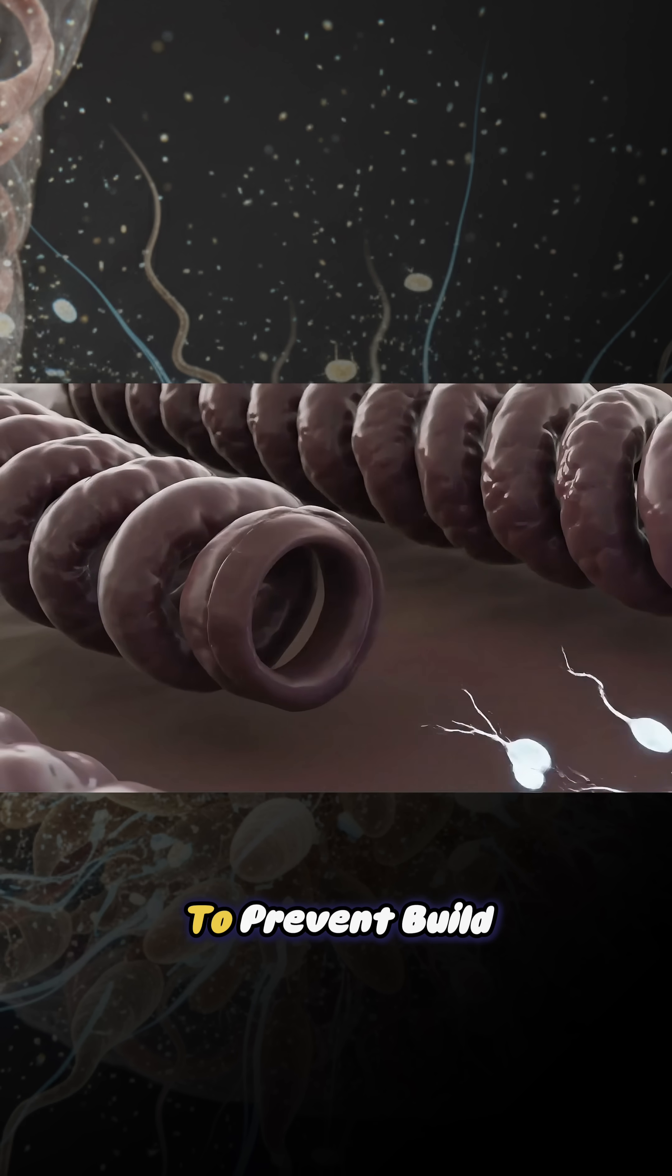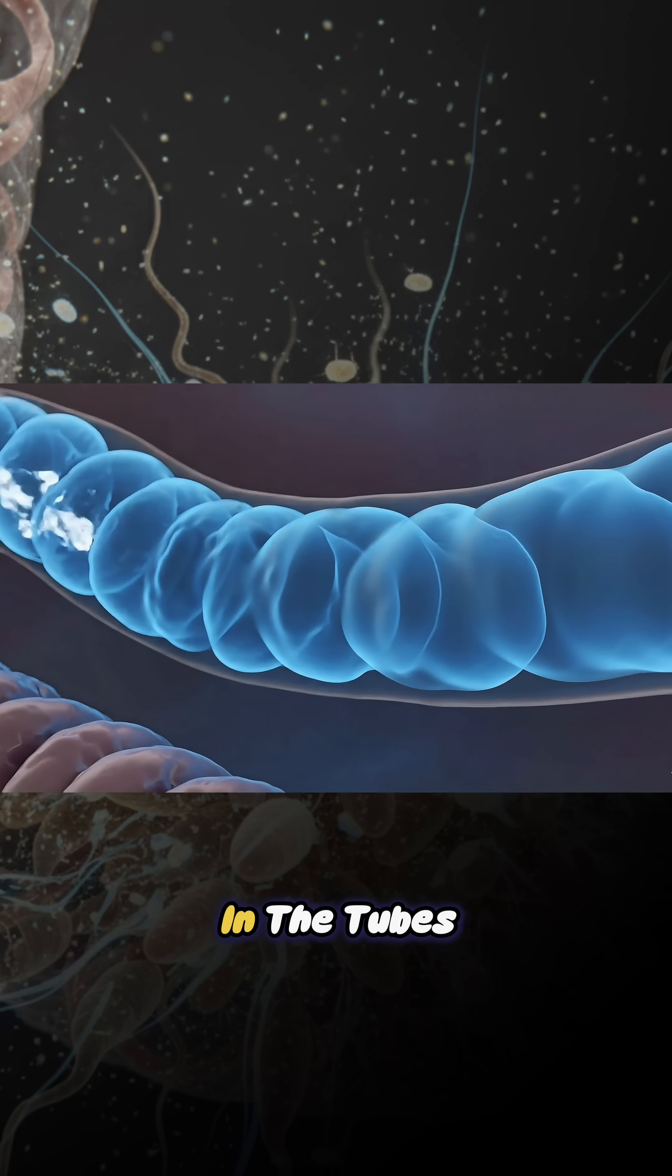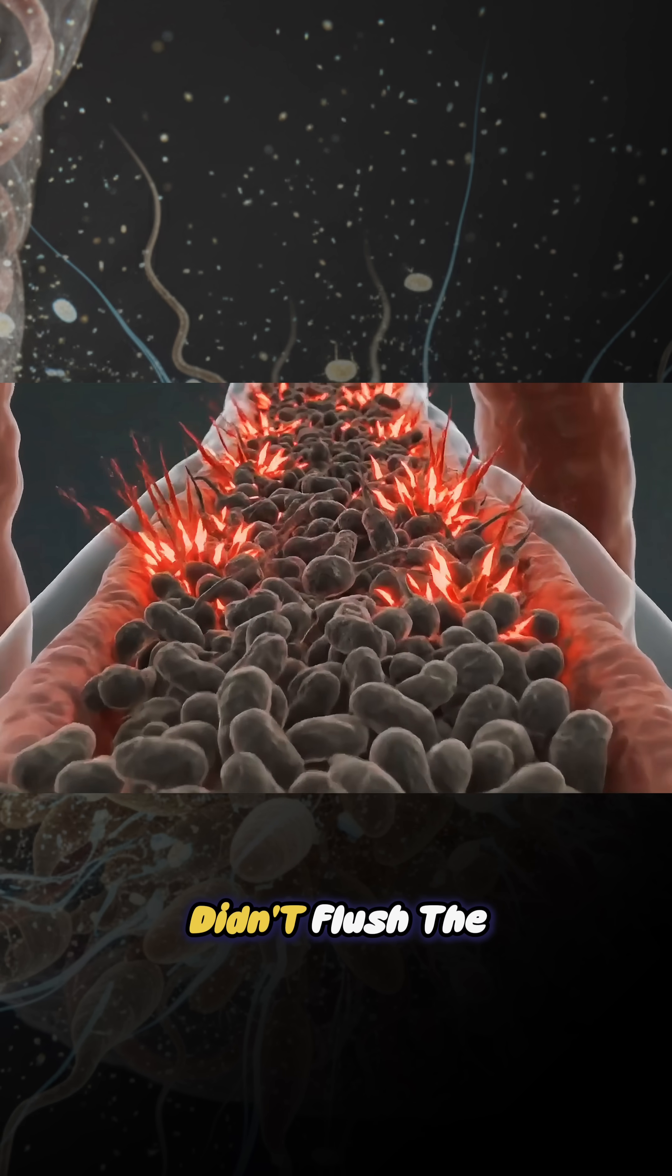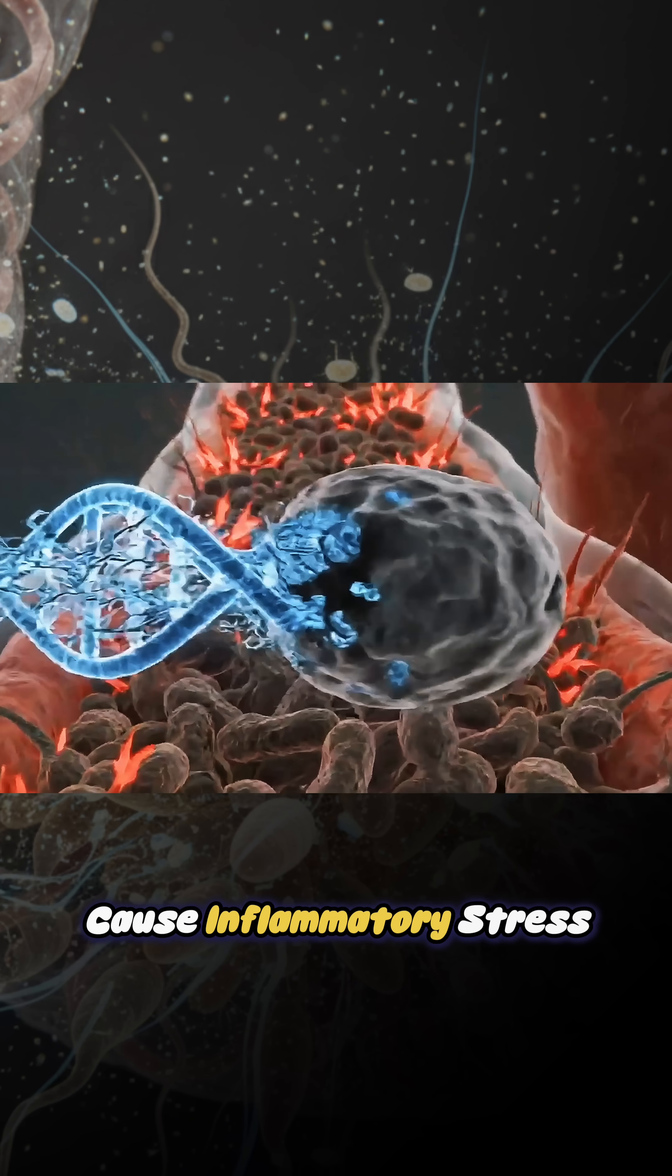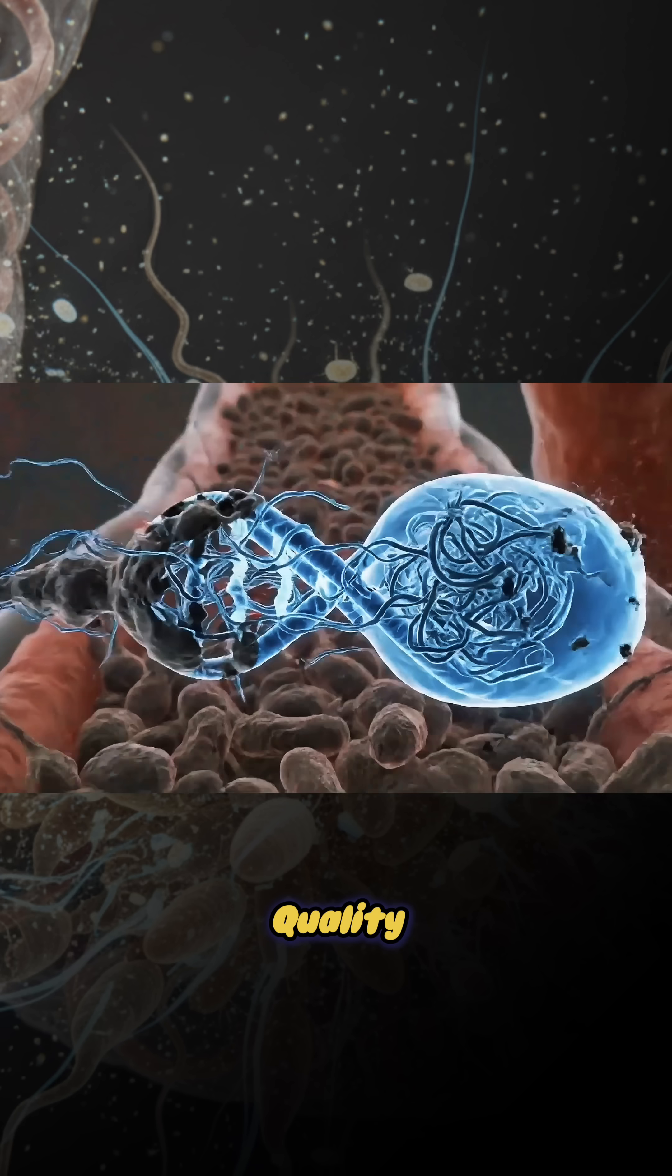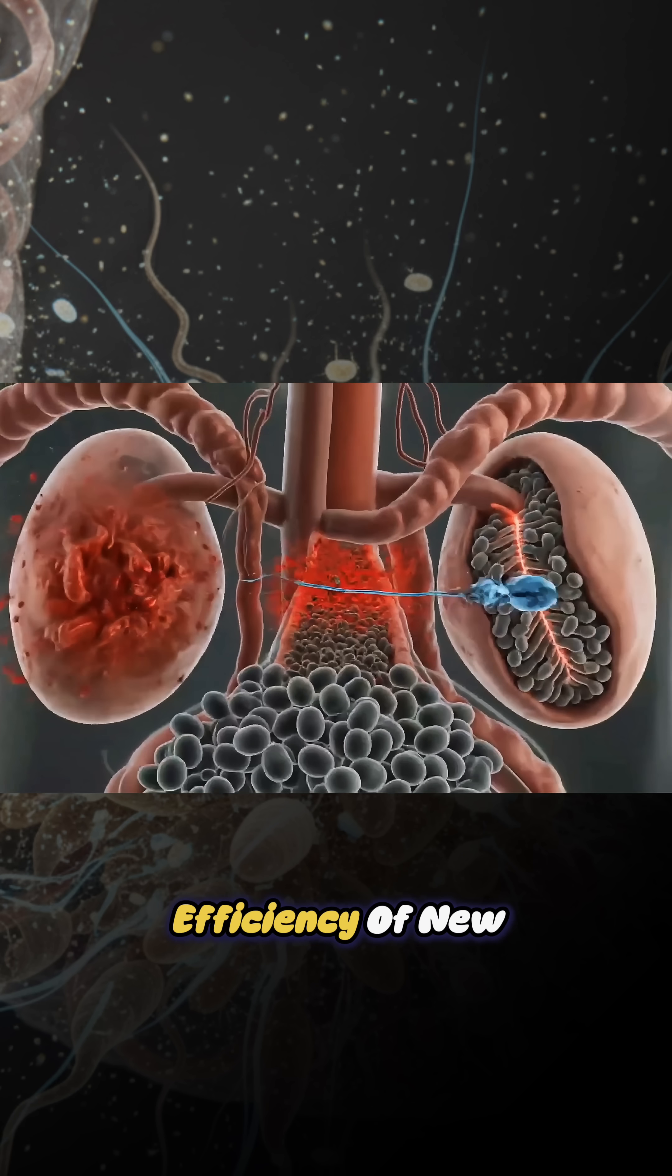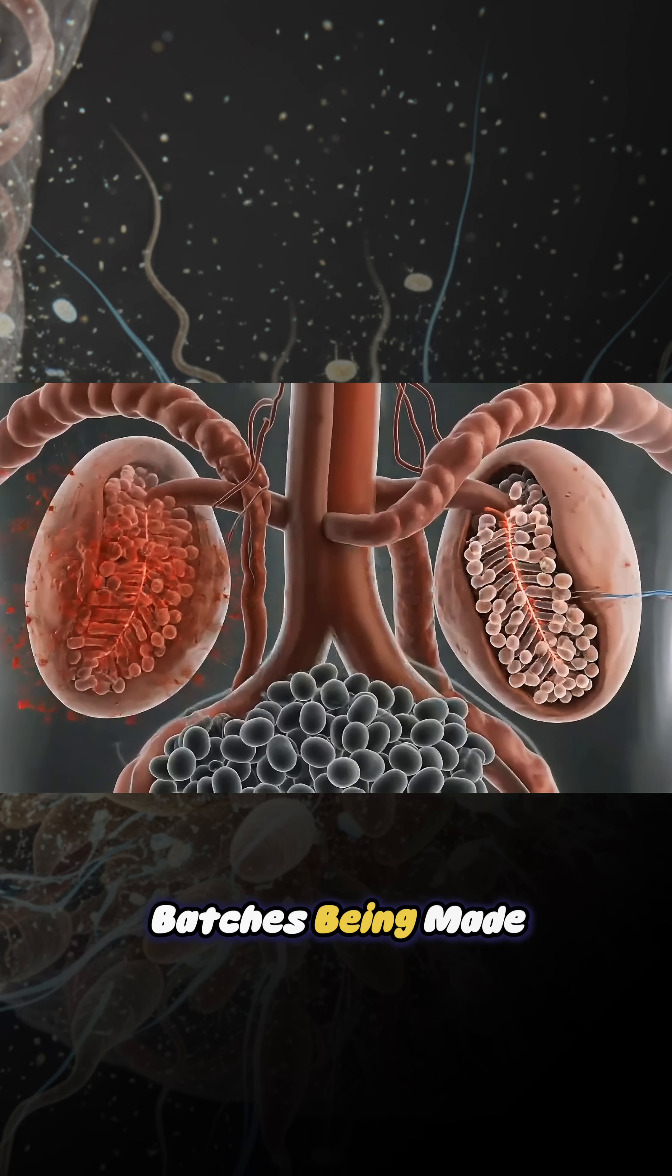A pressure release valve to prevent buildup and inflammation in the tubes. If your body didn't flush the system, stagnant sperm could cause inflammatory stress, mess with DNA quality, and reduce the efficiency of new batches being made.